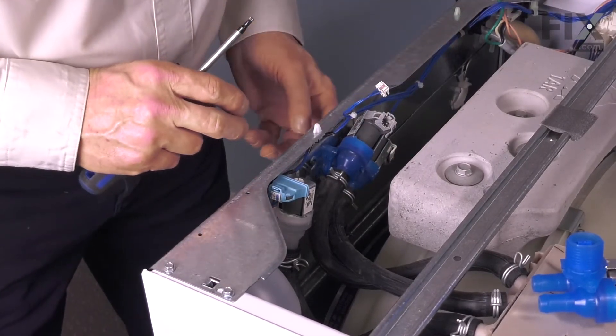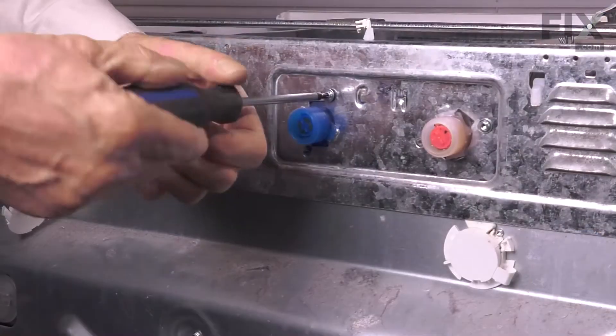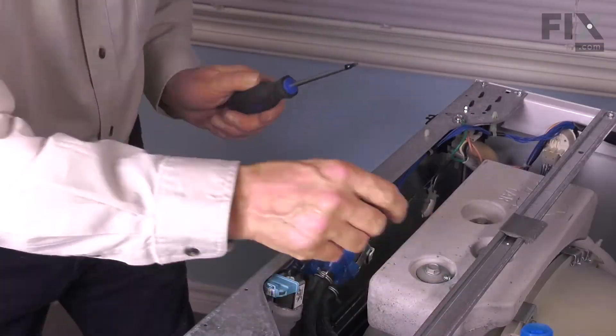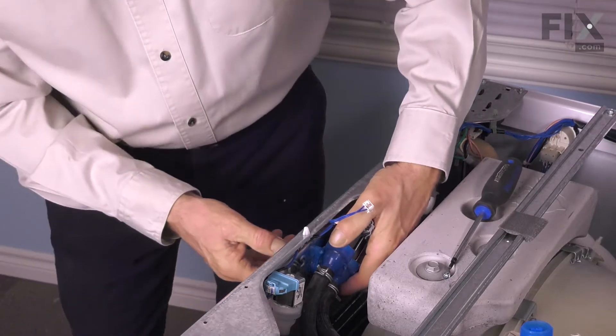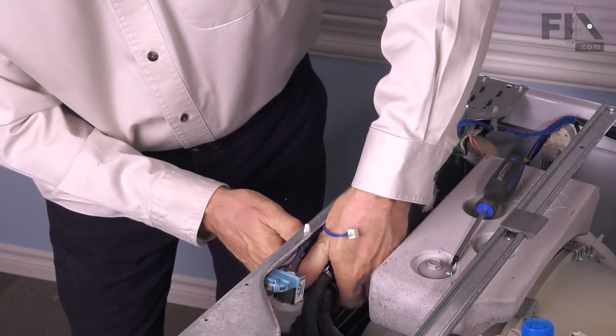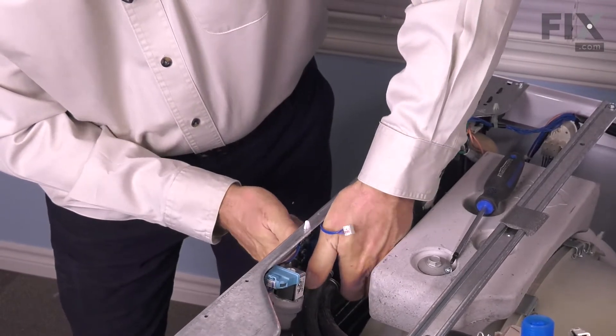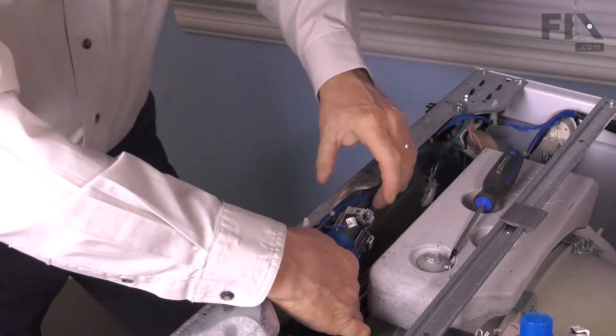Now we'll remove the retaining screw from the outside of the cabinet. Then we're going to rotate that valve to line up the tabs, so there's some slotted openings on that back panel.